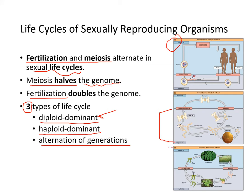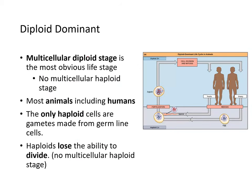There are also organisms like plants that alternate between haploid-dominant and diploid-dominant stages. For diploid-dominant organisms, the multicellular diploid stage is the most obvious life stage — there is no multicellular haploid stage. Most animals, including humans, are diploid-dominant.